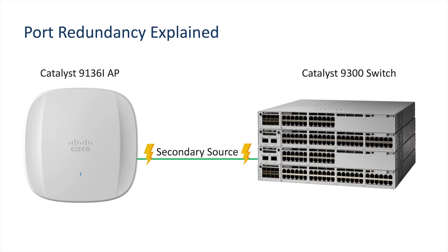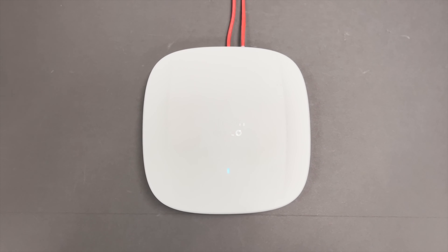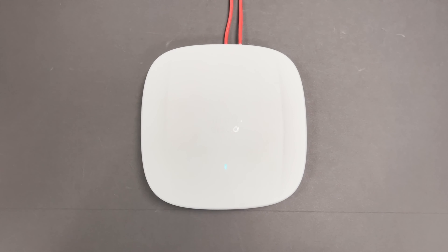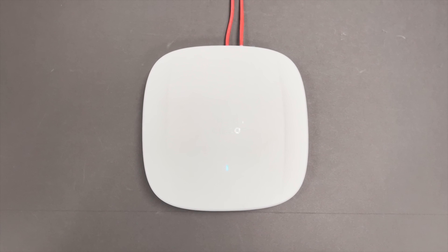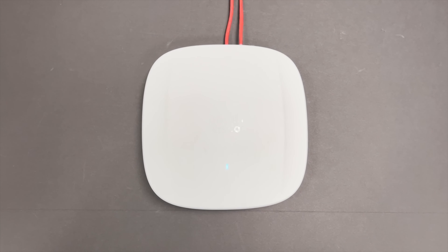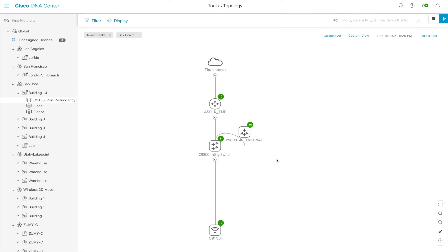Port redundancy is a powerful feature, especially for mission-critical environments where a wireless network outage could result in direct monetary loss. Here, I have my Catalyst 9136i with both ports connected to a PoE switch, with my entire network monitored on Cisco DNA Center's topology page.